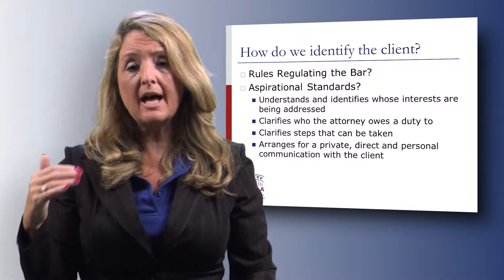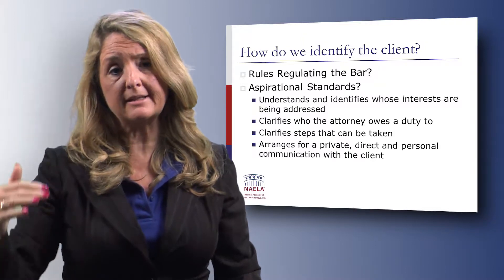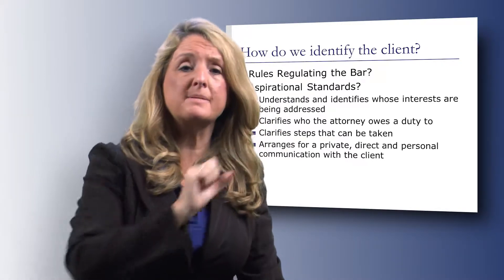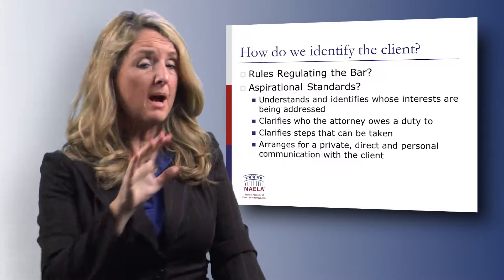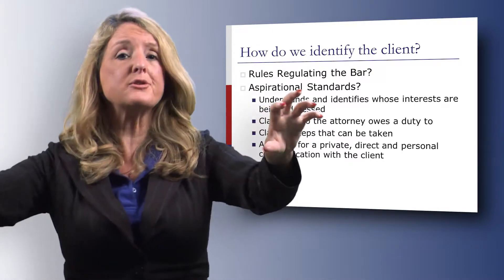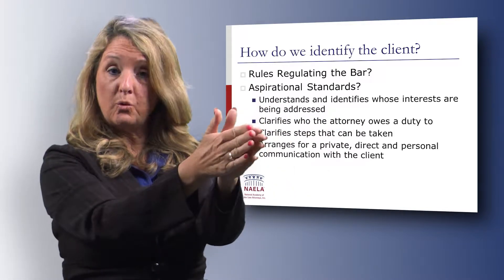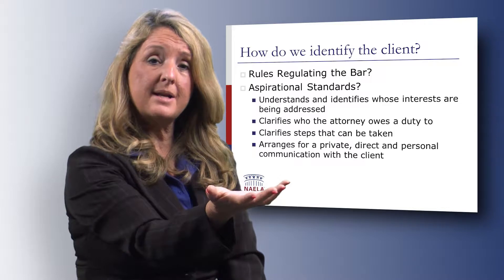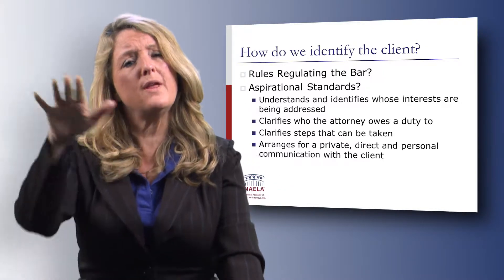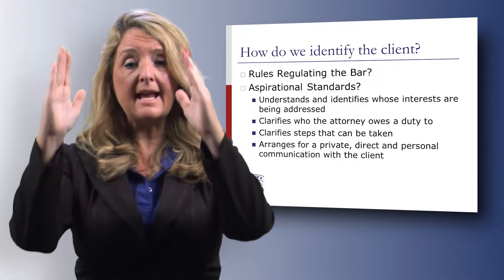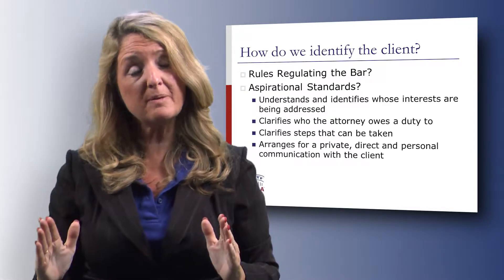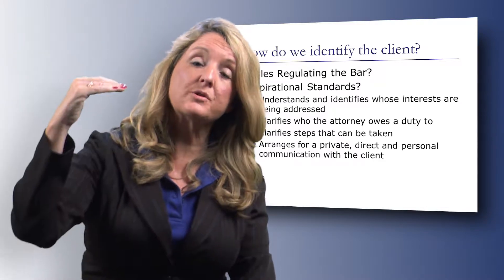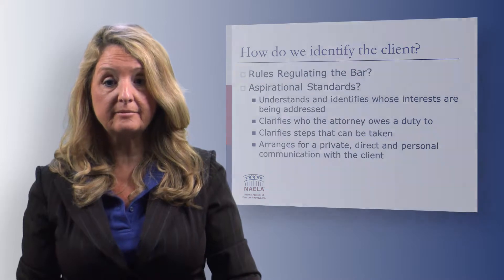We want to think about not only who is the client from the attorney's perspective, but who is the client from other people's perspective. We want to ask: who do I think is my client — I think mom is my client. Well, who does mom think the client is? Does mom think she's the sole client, or does mom think you're representing her and her daughter who came with her? The attorney needs to know who the client thinks they're representing, and who everyone else involved thinks the client is. Most importantly, the attorney, the client, and those involved must all have the same answer about who the client is.